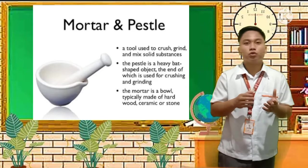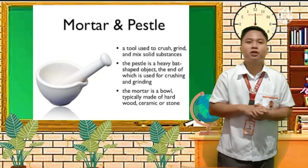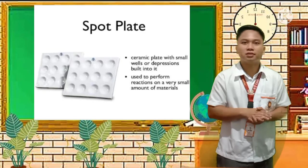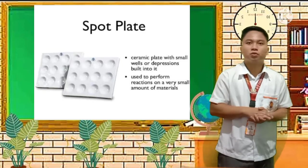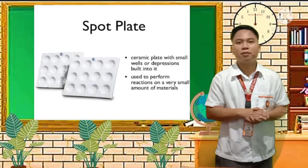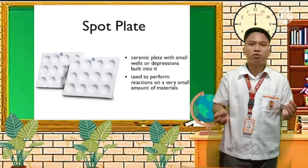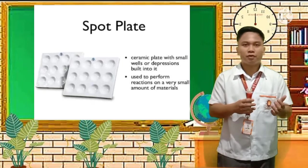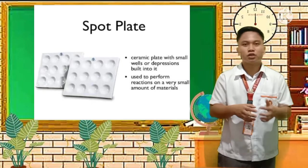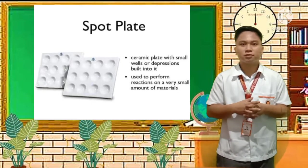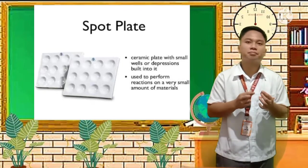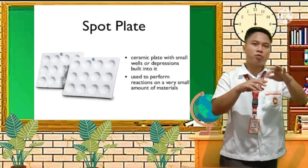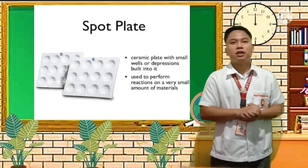Next we have the spot plate. It is a ceramic plate with small wells or depressions built into it. It is used to perform reactions in very small amounts of materials — you mix different kinds of substances in the small wells and observe the reactions that occur in that small space.